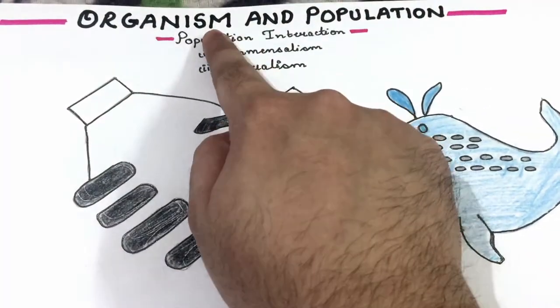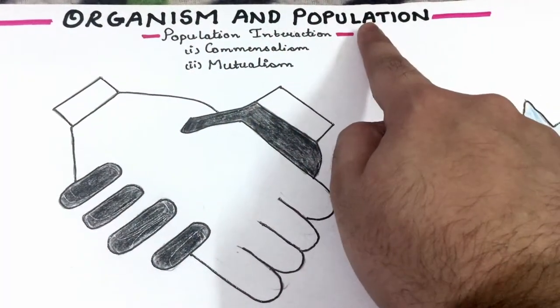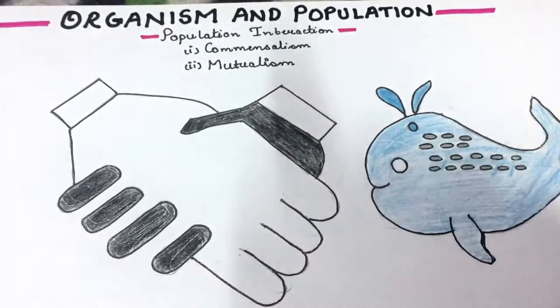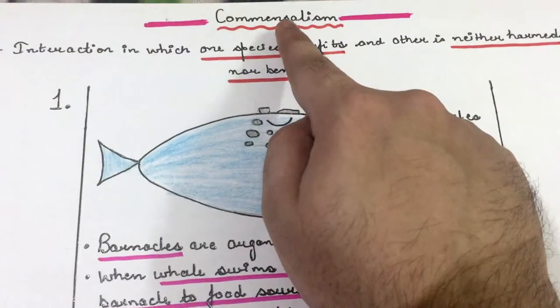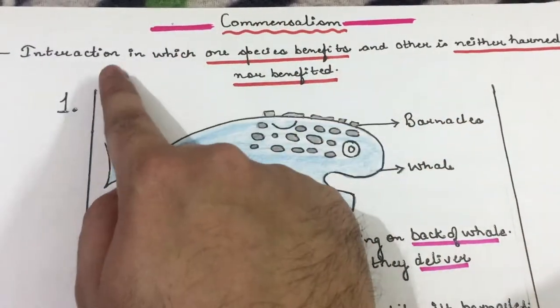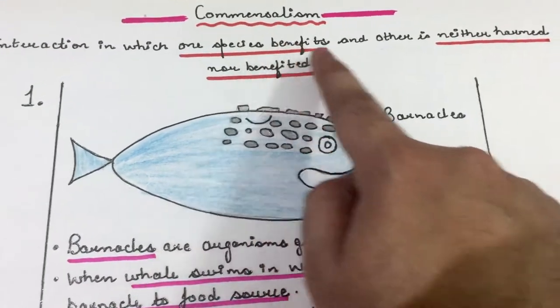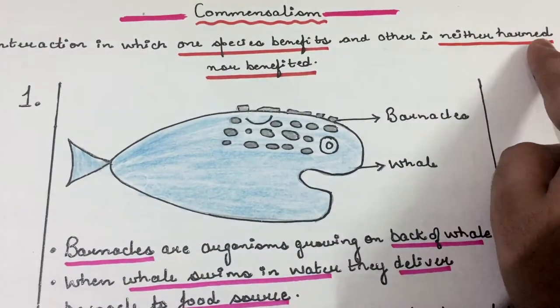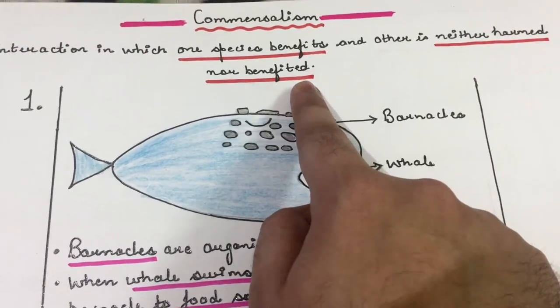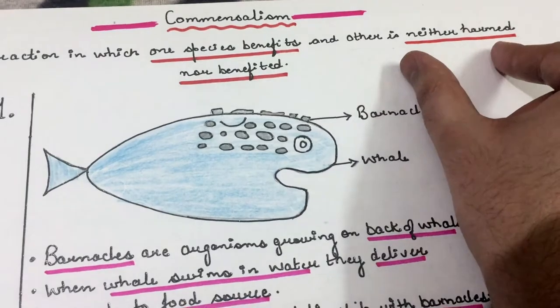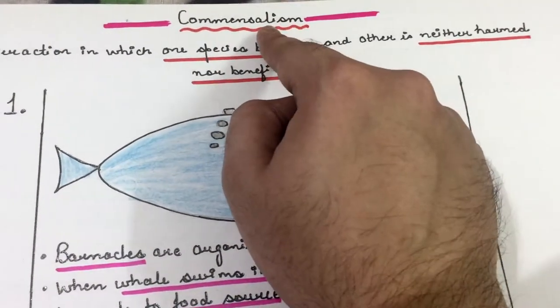Hello students, this is the last video of Organism and Population, and the topic of today is commensalism and mutualism. Commensalism is an interaction in which one species is benefited and the other is neither harmed nor benefited.